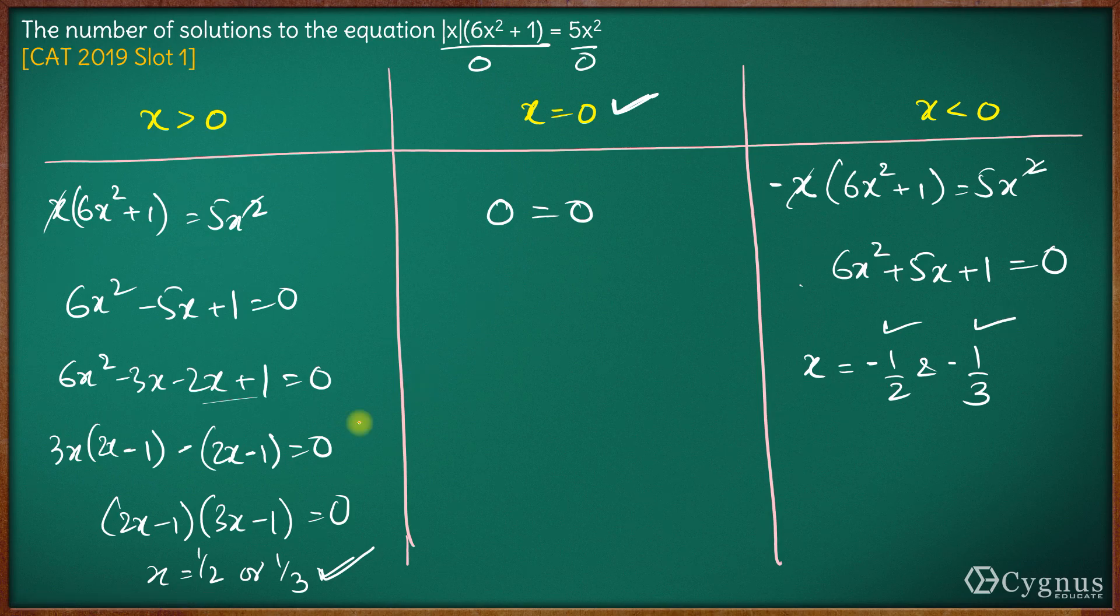So how many acceptable values are there? Two from here, one from here, and two from here. A total of 5 values are acceptable. Hence the answer to this question is 5. There are 5 solutions to this equation. That's it for this question, thank you.